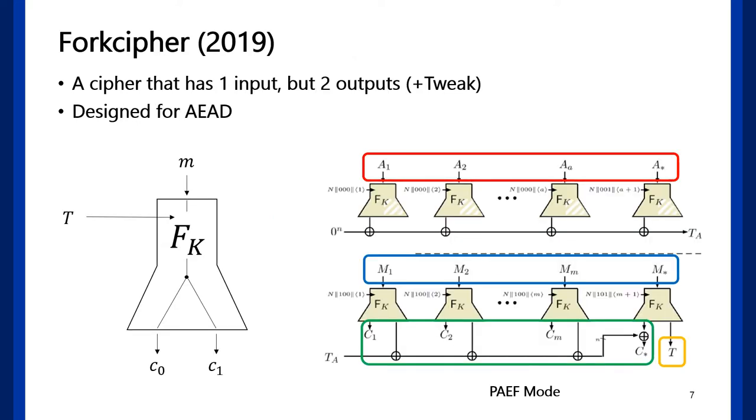And in 2019, the next primitive arrives. Forkcipher makes additional output to tweakable block cipher. It seems that the message input is forked to two different outputs, C0 and C1. That's why the cipher is the forkcipher. The author of the forkcipher also suggested corresponding AEAD. PAEF is one of that.